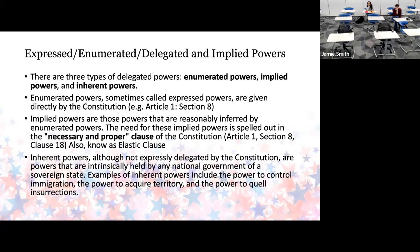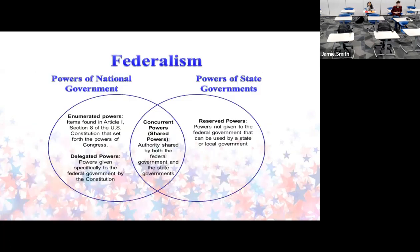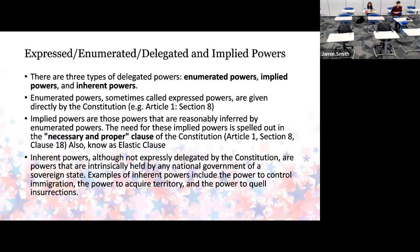Expressed, enumerated, and delegated powers — expressed and enumerated powers are things the federal government says it's in charge of: the money, certain federal crimes, setting up Congress and the executive branch. But there are also what we call implied powers. Most of the implied powers went to the states, because the last amendment in the Bill of Rights says if the federal government isn't in charge of it, the states are. That's why the federal government makes some laws about voting, but the states get to decide how they run their elections.